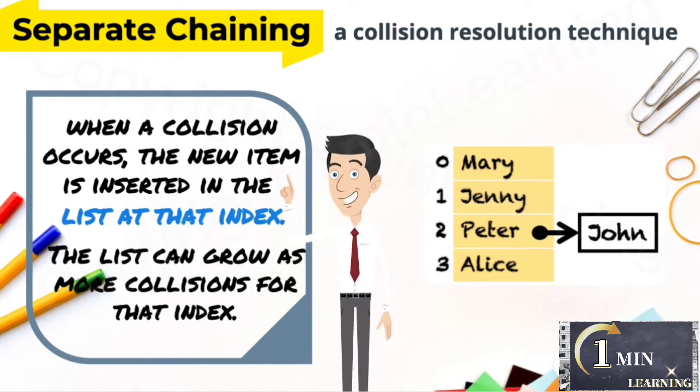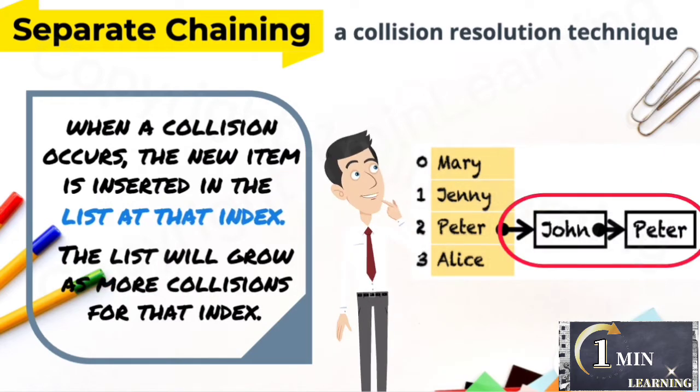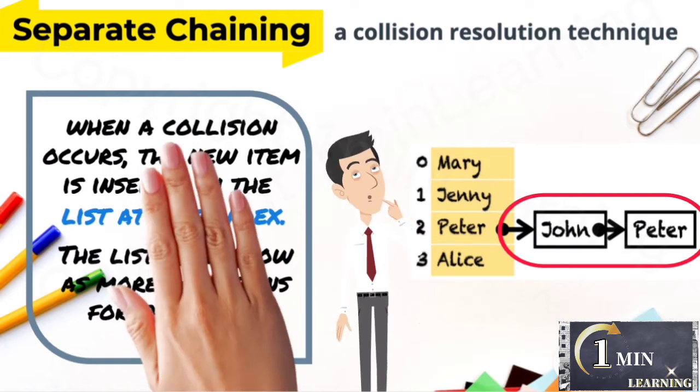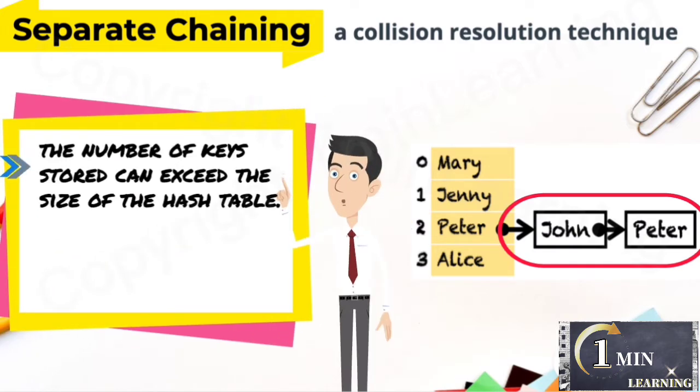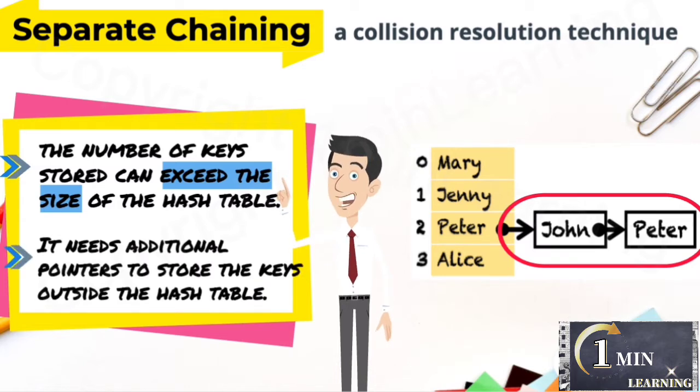The list can grow as more collisions occur for that index. The number of keys to be stored in the hash table can exceed the size of the hash table. It needs additional pointers to store the keys outside the hash table.